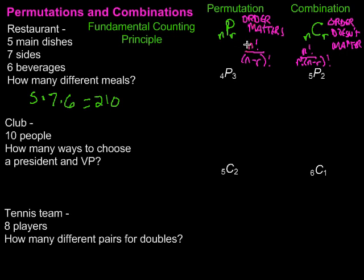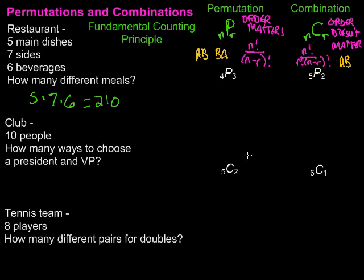For example, in a permutation with two items, A and B, we'd have A-B as one arrangement and B-A as another. In a combination, those two would count as the same thing because order doesn't matter — A and B would cover both. That R factorial is getting rid of that duplication, and we'll see how that plays out in the examples.